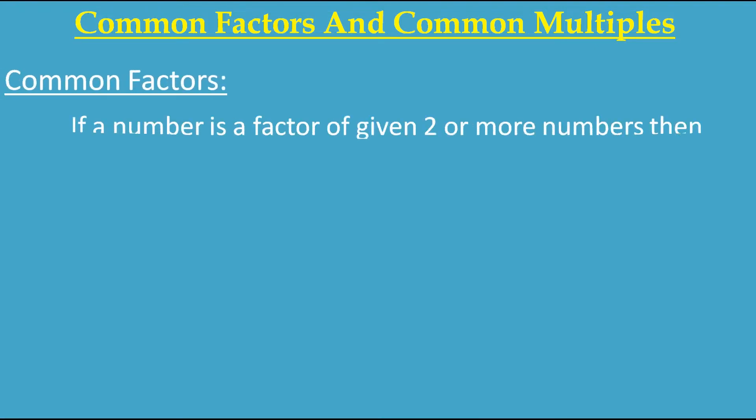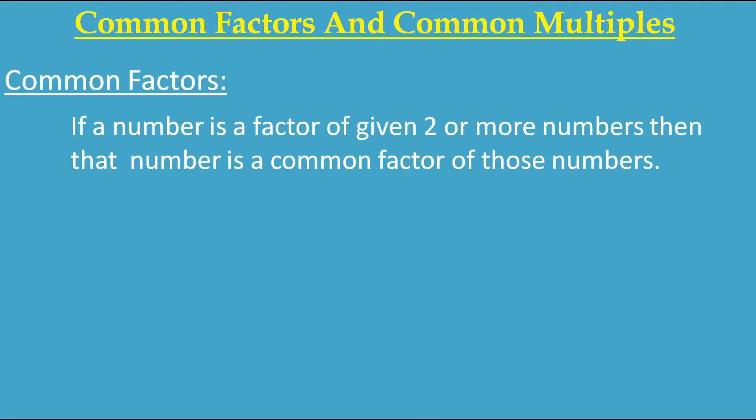If a number is a factor of given two or more numbers, then that number is a common factor of those numbers. Means if you are finding the factors of any two or more numbers and you find that there is a number which is the same for all of them — the same factor is there in all of them — then that number is called a common factor. Let's understand with the help of an example.